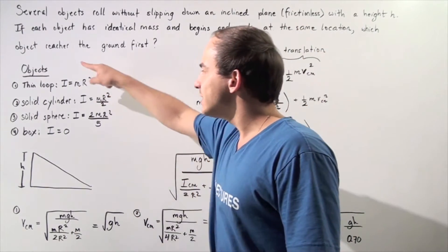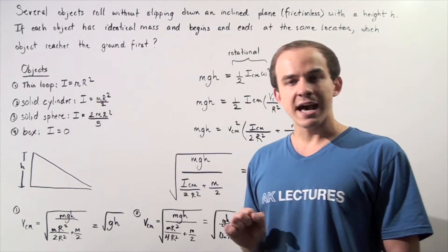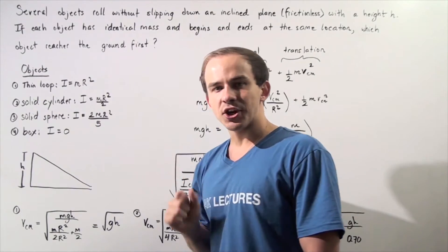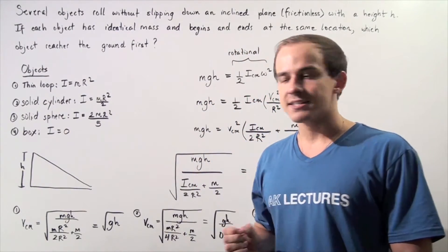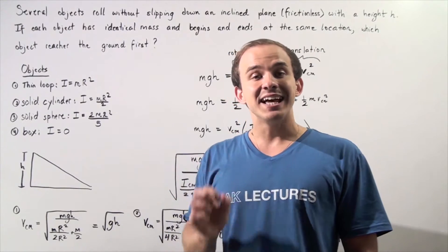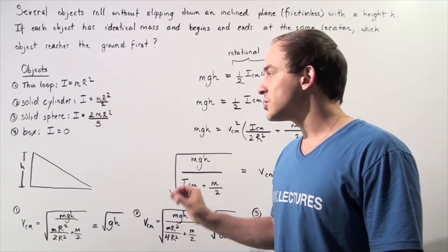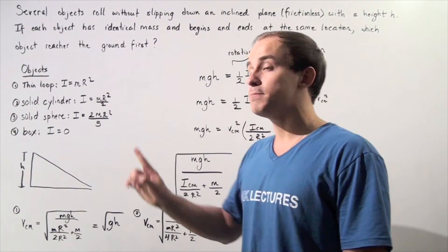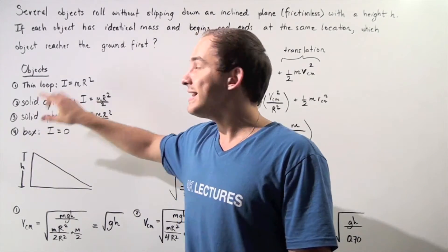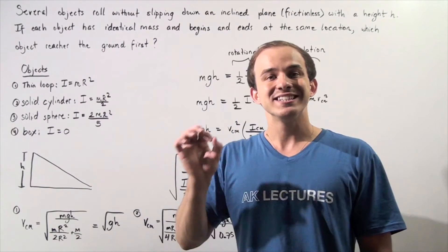Let's begin by listing all the types of objects that we will be testing. We have a thin loop, a solid cylinder, a solid sphere, and a box. Each one of these objects has the same exact identical mass and begins and ends at the same exact location. Each one of these objects begins at a height of h above the ground, and each one begins with an initial velocity of zero.